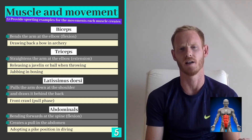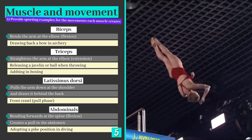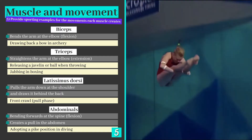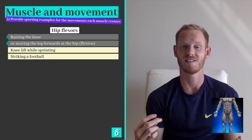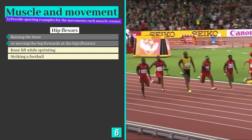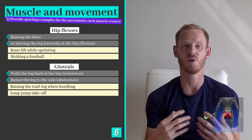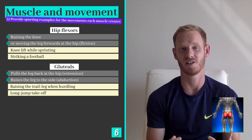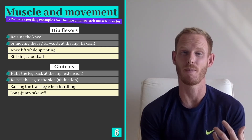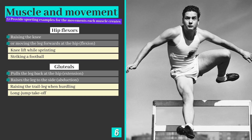The abdominals create a pull in the spine enabling us to bend forwards. A nice example is when the abs contract allowing divers and gymnasts to flex at the spine and adopt a pike position in flight. The hip flexors allow flexion at the hip joint by pulling on the femur and drawing the leg forwards and upwards — we use our hip flexors every time we raise our knee while running and when kicking a football. The gluteals work in opposition to the hip flexors by pulling the legs downwards and backwards at the hip. They are important for long and triple jumpers when taking off, but also enable sideways movement or abduction, which is essential for hurdlers when raising their trail leg.